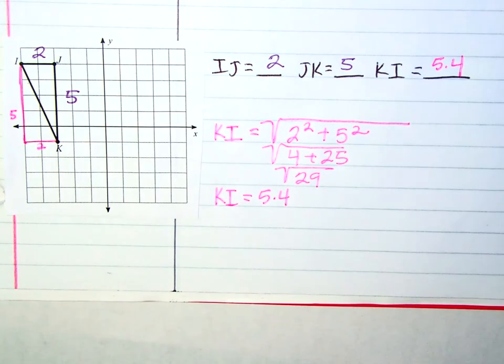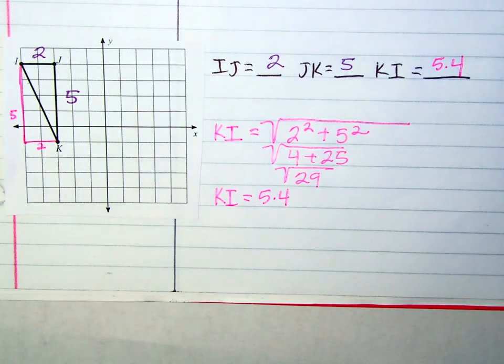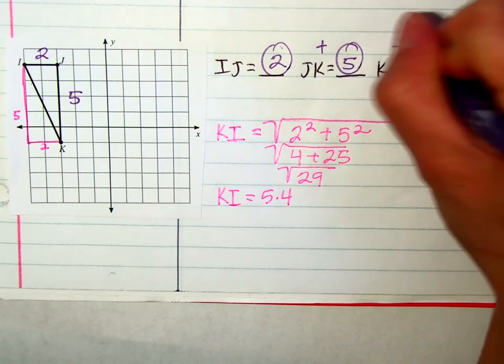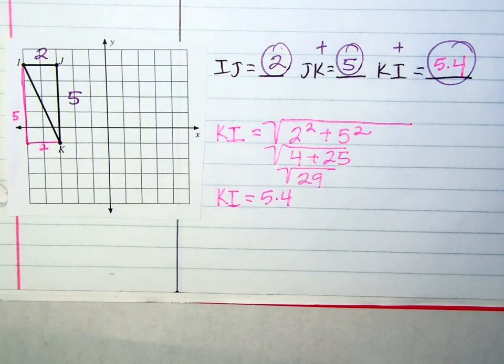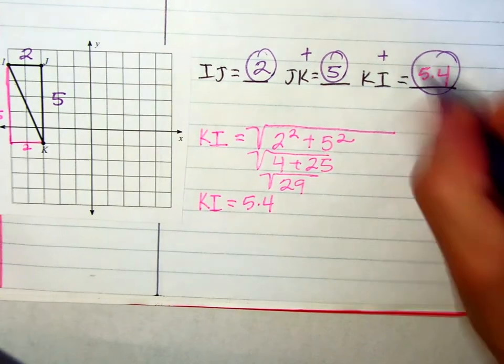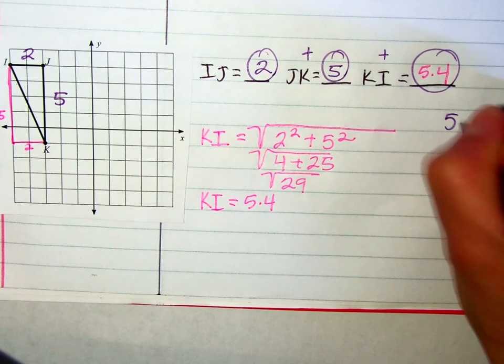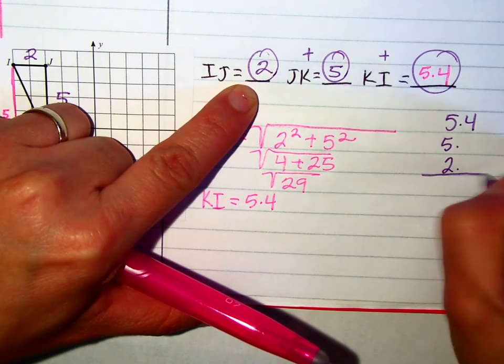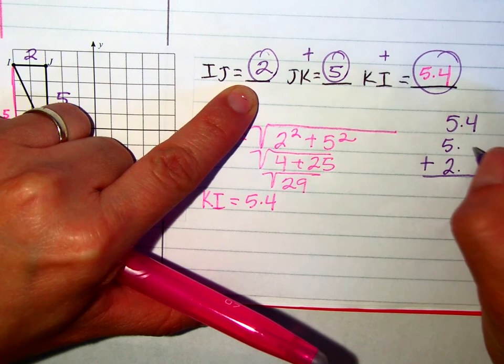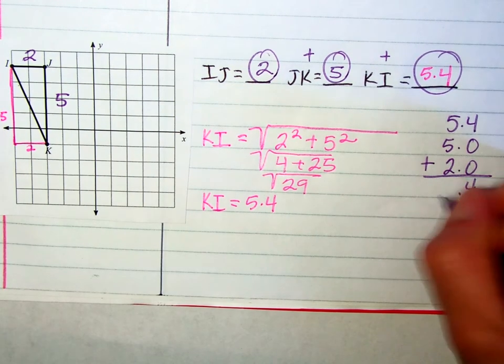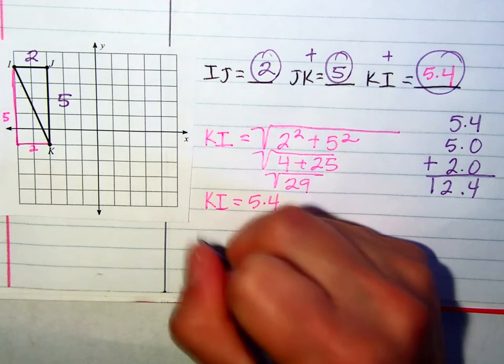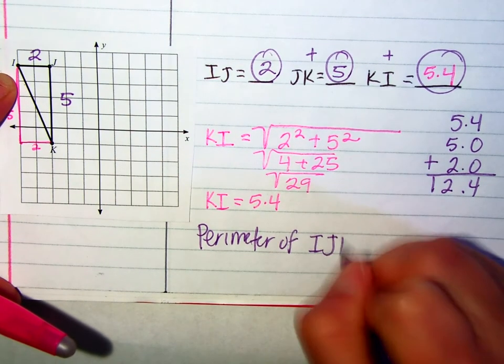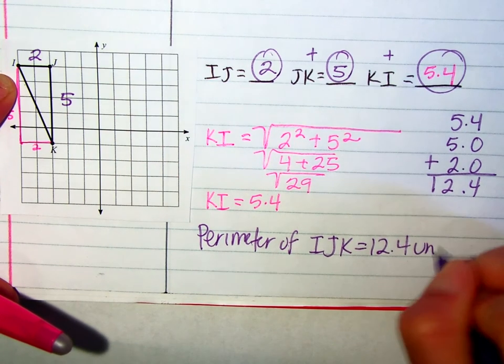So segment KI is going to be 5.4 units. That's great. So now that we have all three sides together, now we can add them. So we're going to add the 2, the 5, and the 5.4. If you need to use your calculator, please use that. If not, you can line these up. This is a 5.4, this would be a 5.0, this would be a 2.0. Making sure to line up those decimals when you add, and that's going to give me a 12.4. So perimeter of IJK is going to be 12.4 units.